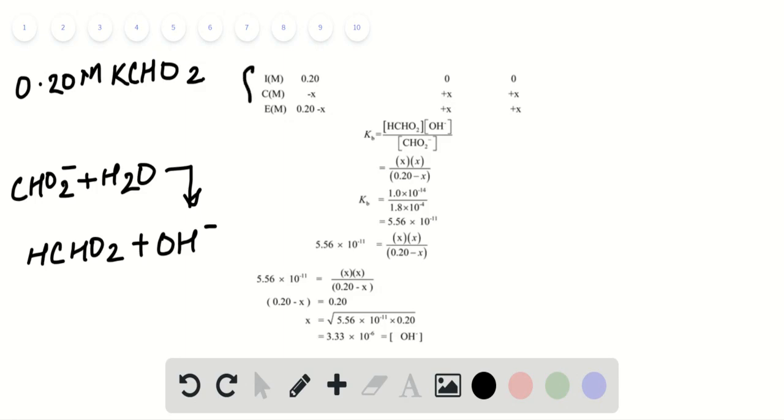We have to draw an ICE table and determine the equilibrium constant for basic nature, that is KB for the reaction.